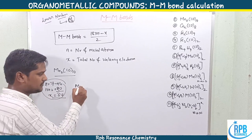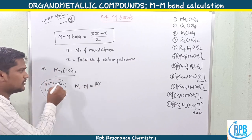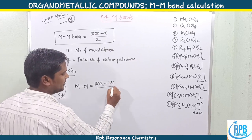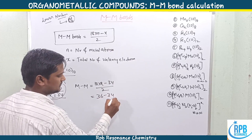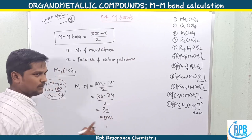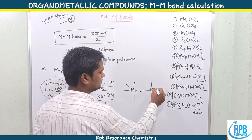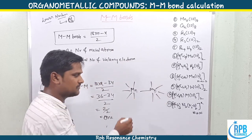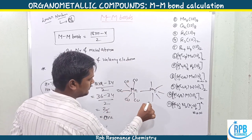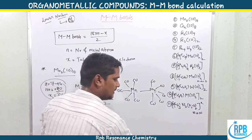Now applying the formula: metal-metal bonds = (18n − x) / 2 = (18×2 − 34) / 2 = (36 − 34) / 2 = 2/2 = 1. So only one metal-metal bond is observed in Mn₂(CO)₁₀. The structure shows a Mn–Mn single bond with five carbonyl groups on each manganese. This is the method to predict the total number of metal-metal bonds in organometallic compounds.